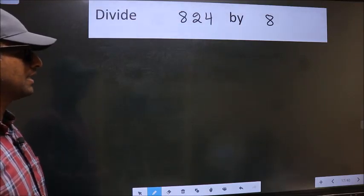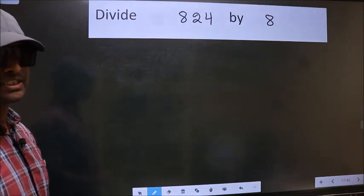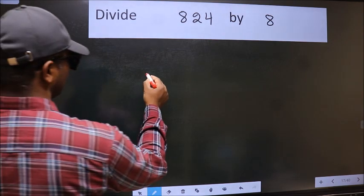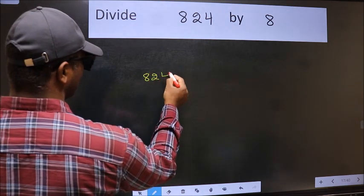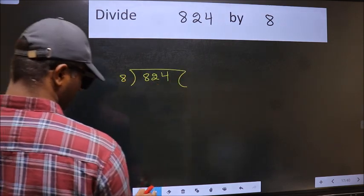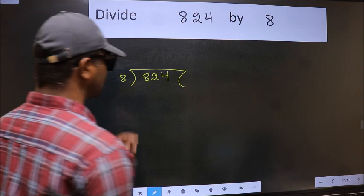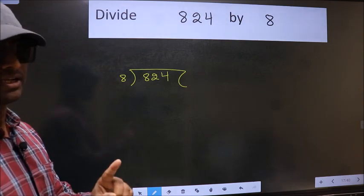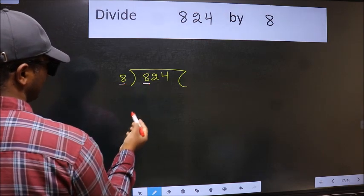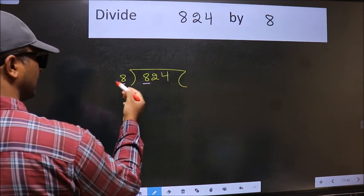Divide 824 by 8. To do this division, we should frame it in this way: 824 here and 8 here. This is your step 1. Next, here we have 8 and here 8. When do we get 8 in the 8 table? 8 once 8.